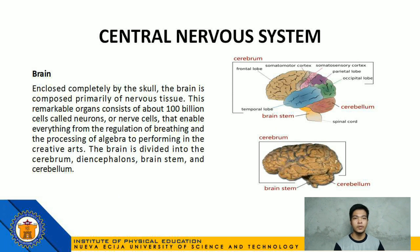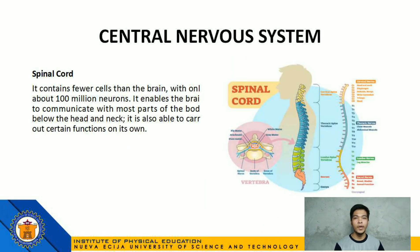Under the central nervous system, we have the brain, which is enclosed completely by the skull. The brain is composed primarily of nervous tissue and consists of about 100 billion cells called neurons or nerve cells, that enable everything from the regulation of breathing and the processing of algebra to performing in the creative arts. The brain is divided into the cerebrum, diencephalon, brainstem, and cerebellum. We also have the spinal cord, which contains about 100 million neurons and enables the brain to communicate with most parts of the body below the head and neck.